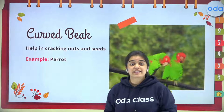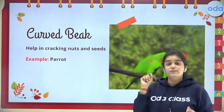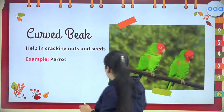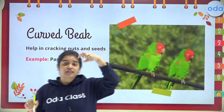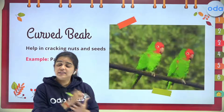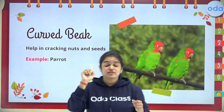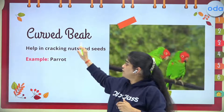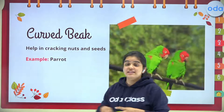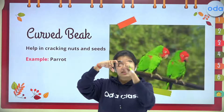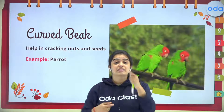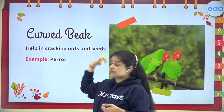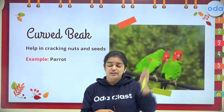Coming to the second type — the curved beak. You can see it is in a curved shape. The curved beak is for cracking nuts. That's why parrots have a curved beak — it is curved in shape and used to crack nuts so that the parrot can eat them.